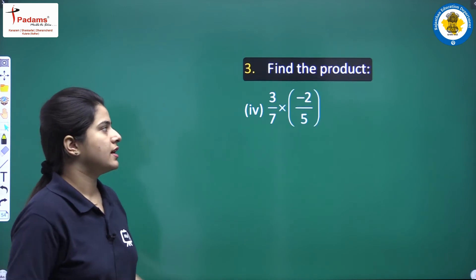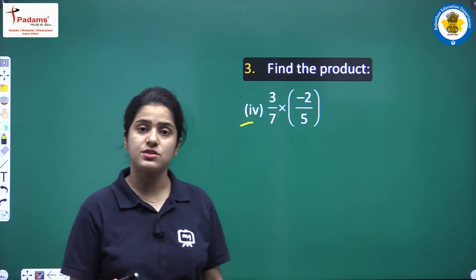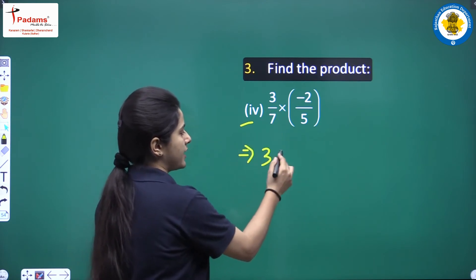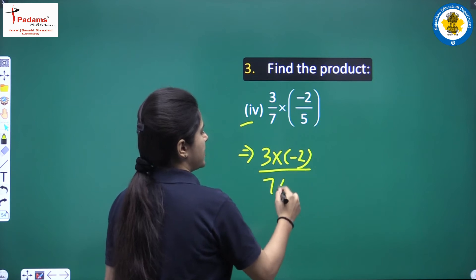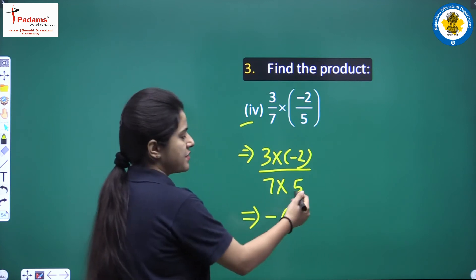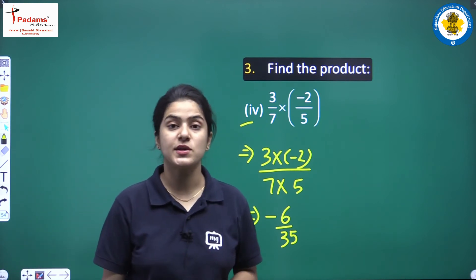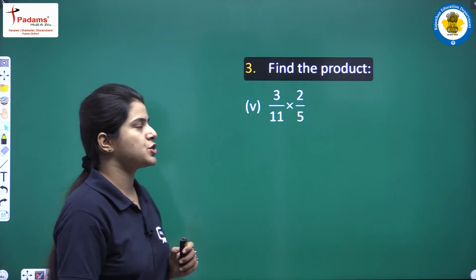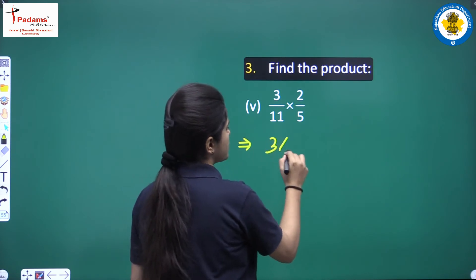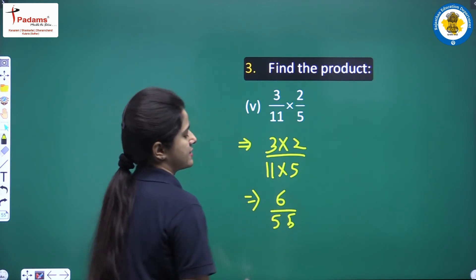Look at the next question, the fourth part. We have to multiply two rational numbers, that equals product of numerators upon the product of denominators. We will multiply 3 into minus 2 upon 7 into 5. 3 into minus 2 is minus 6 and 7 into 5 is 35. So the answer is minus 6 upon 35. Next: 3 upon 11 into 2 upon 5 — multiply numerators by numerators and denominators by denominators. 3 into 2 upon 11 into 5 equals 6 upon 55. This is the answer.